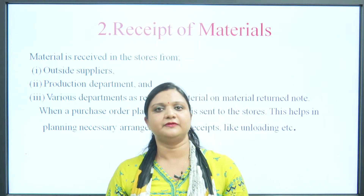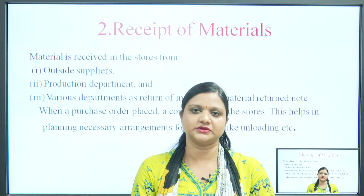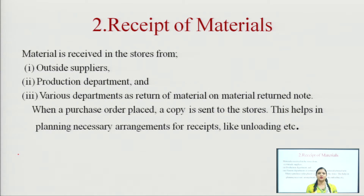The second record is receipts of materials. Material is basically received in the store from outside suppliers — business entities which make the product available to retailers for selling to individual customers. Material is also received from the production department, and various departments have a material return note. When a purchase order is placed, a copy is sent to the stores, which helps in planning necessary arrangements for receipts like unloading. Whenever you as a store manager receive an order, you can plan the necessary course of action to handle the merchandise.